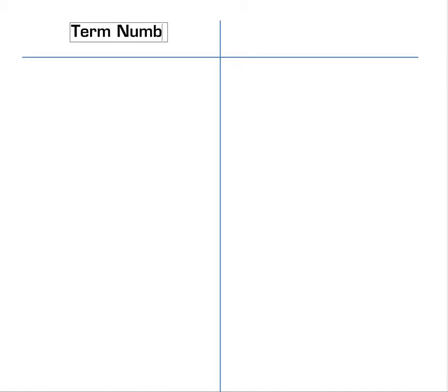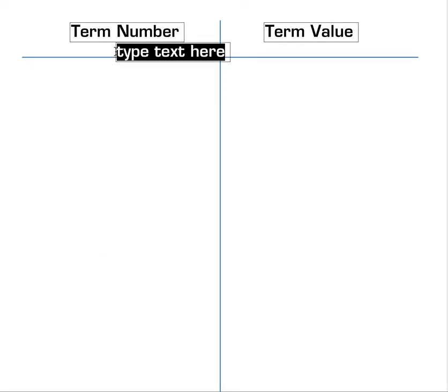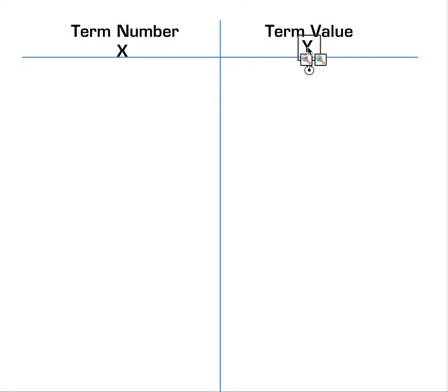So we're going to start with the term number, and that usually goes in the top left-hand section. And then the term value is usually put into the top right. Now as you recognize those values, in graphing you may also identify that the term number in this case would be identified as the X and the term value would be shown as the Y.